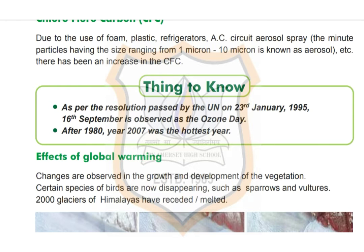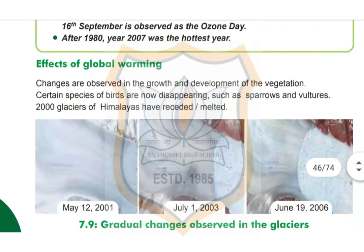Things to know: as per the resolution passed by the UN on 23rd January 1995, 16th September is observed as Ozone Day. After 1980, the year 2007 was the hottest year recorded.